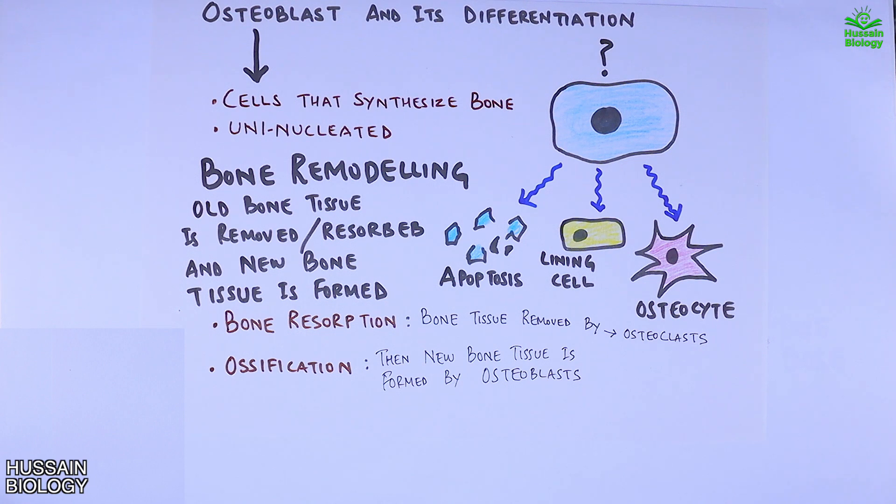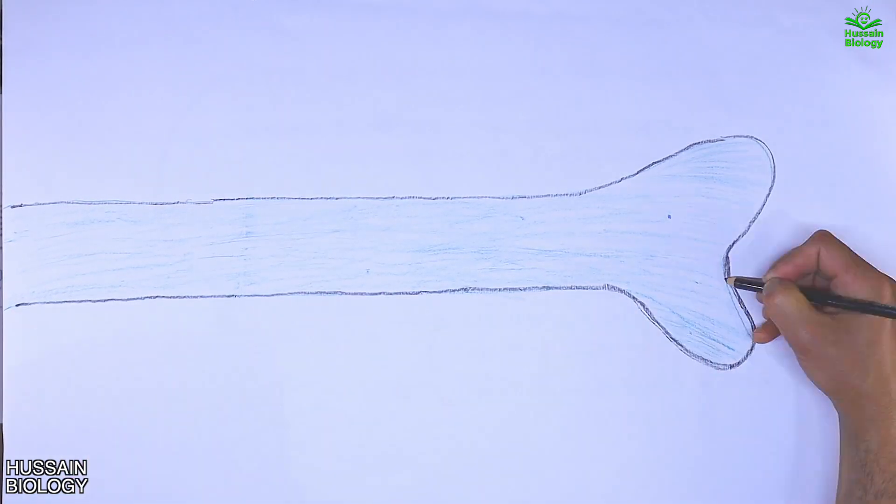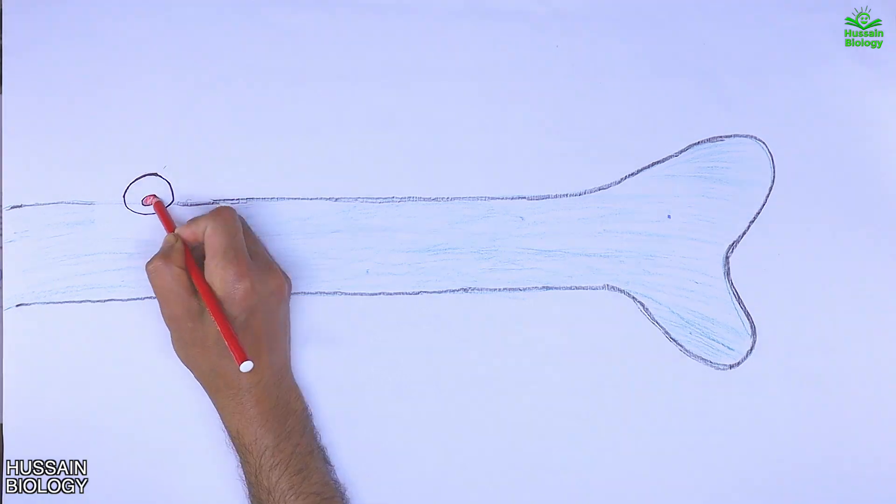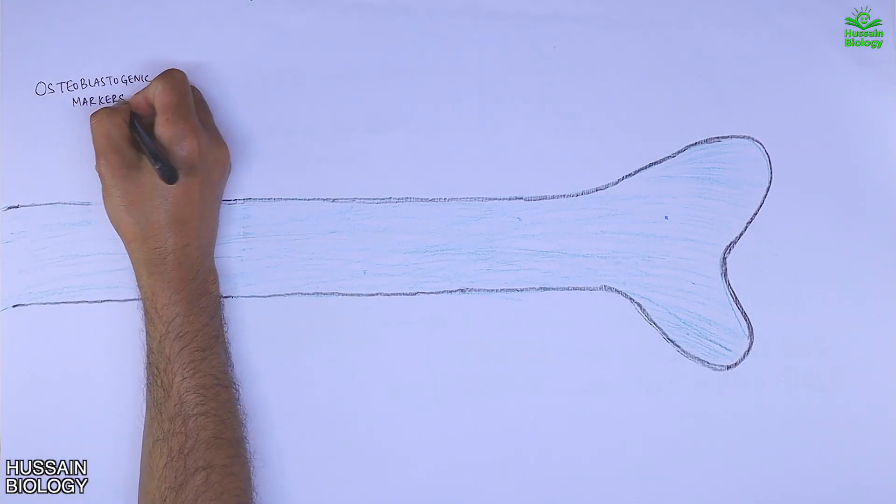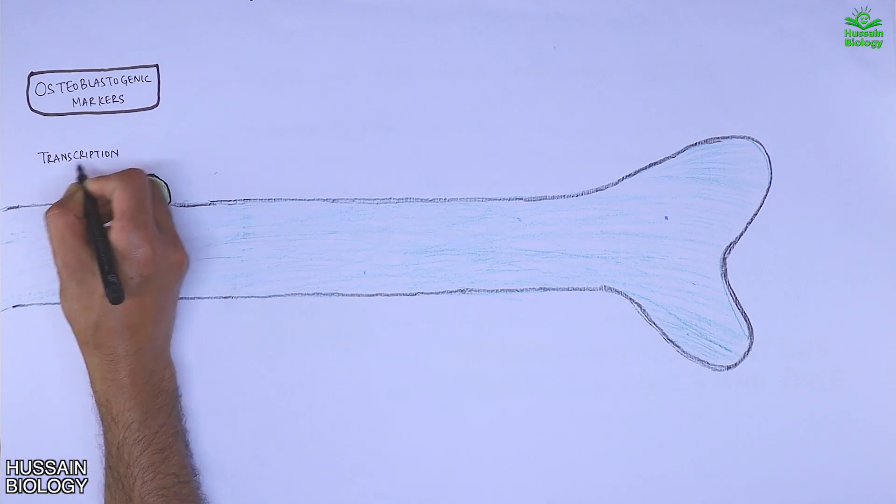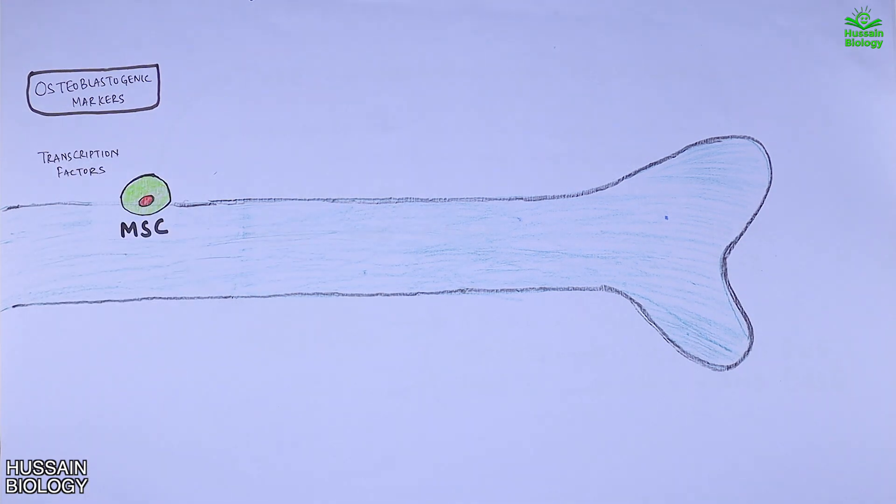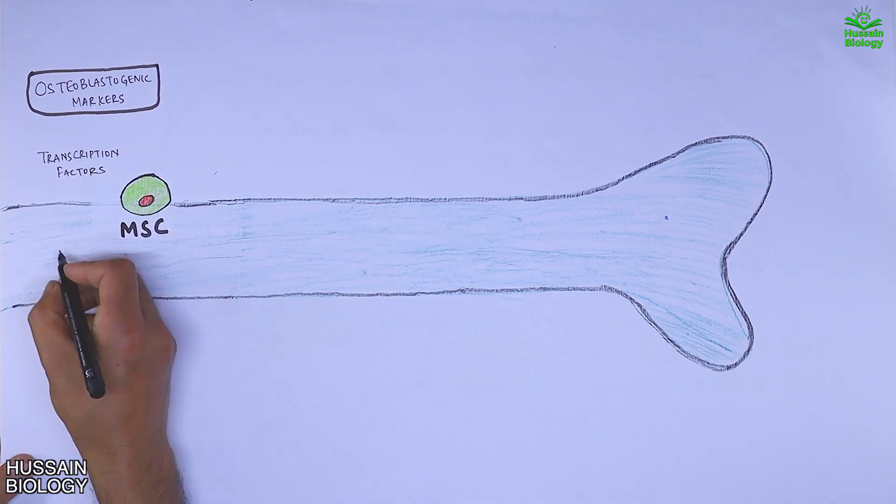Now let's get into osteoblast differentiation. This all happens on the bone surface. Here in this diagram we have the bone surface with mesenchymal stem cells (MSC). Here we will be showing the osteoblastogenic markers, in the middle we will be showing the transcription factors, and here we will be showing the signaling molecules.